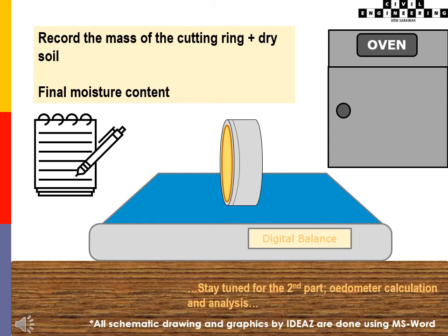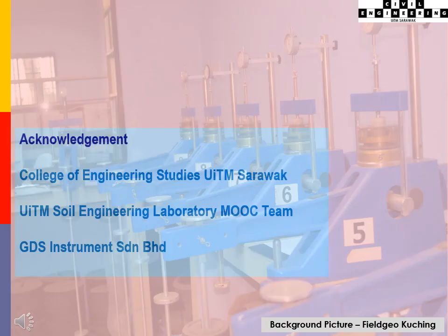Record the mass of the cutting ring plus the dry soil and then calculate the final moisture content. We have come to the end of the step-by-step basic guide of the odometer consolidation testing module. Thank you very much for watching.